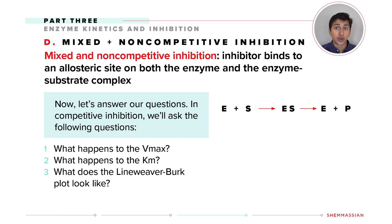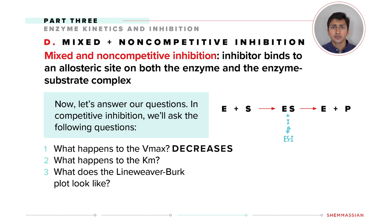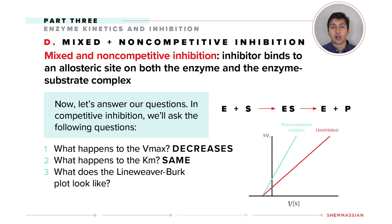As we draw out our reaction scheme, we can see that the inhibitor binds to the enzyme-substrate complex and essentially takes away some of those water slides. As such, Vmax must decrease. Now Km does something interesting here — since the inhibitor binds equally to the enzyme alone and to the enzyme-substrate complex, Km will actually stay the same. On the Lineweaver-Burk plot, our Km is the same so the x-intercept is unchanged. Vmax decreases though, so 1 over Vmax increases.